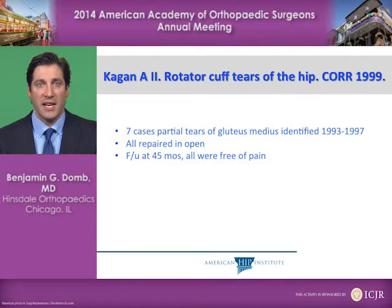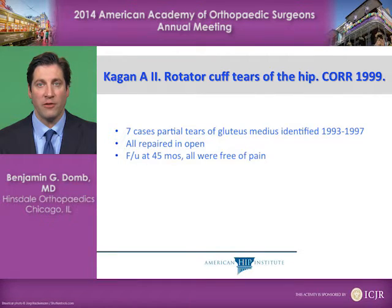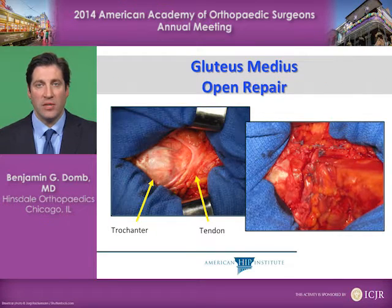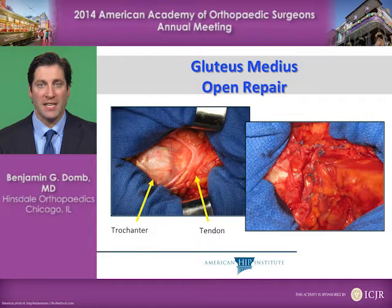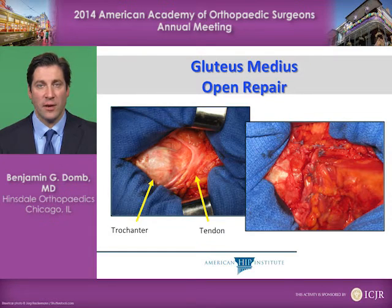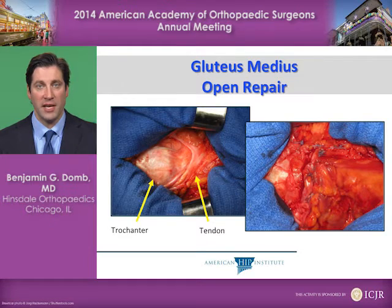In 1999, Kagan et al. described seven cases of partial thickness tears of the gluteus medius, all repaired open, with 45 months follow-up, all free of pain. We still use open gluteus medius repairs primarily for large, full-thickness, retracted tears. In the picture on the left, you see a bald greater trochanter with a tendon retracted 3 to 4 centimeters — this is a massive U-shaped tear of the entirety of the gluteus medius insertion.